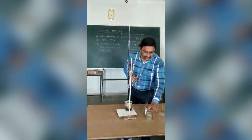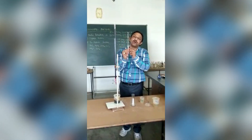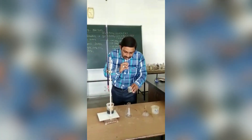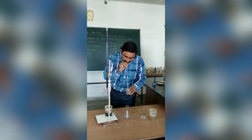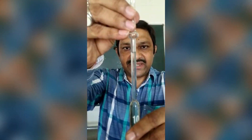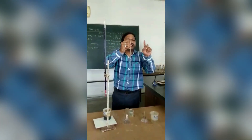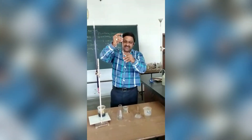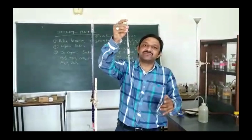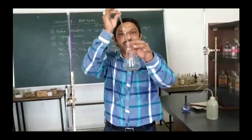Your next step is ferrous ammonium sulphate. You have to take 10 ml ferrous ammonium sulphate through your pipette. Here is your 10 ml pipette. In this case you have to choose the lower meniscus for ferrous ammonium sulphate. Now I am taking ferrous ammonium sulphate solution into my conical flask.